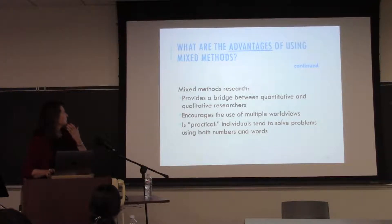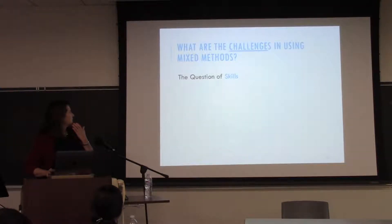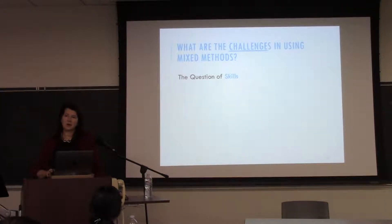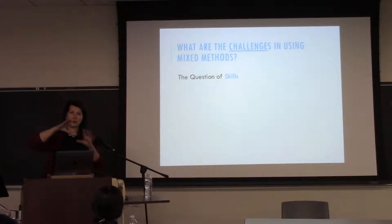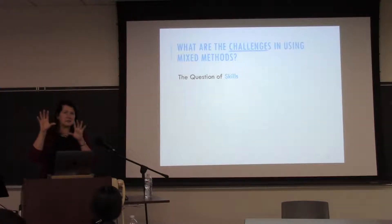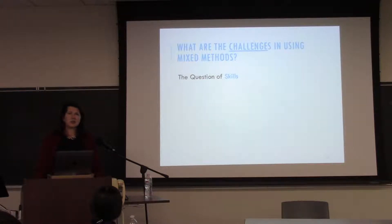What are some challenges of doing this kind of work? Sometimes the data from both methods conflict — they don't converge — and then you have to make sense of the fact that they're not speaking to each other. Ideally they enhance each other — one uses a telescope, the other a microscope — but sometimes they're arguing with one another and you have to decide which one to believe.